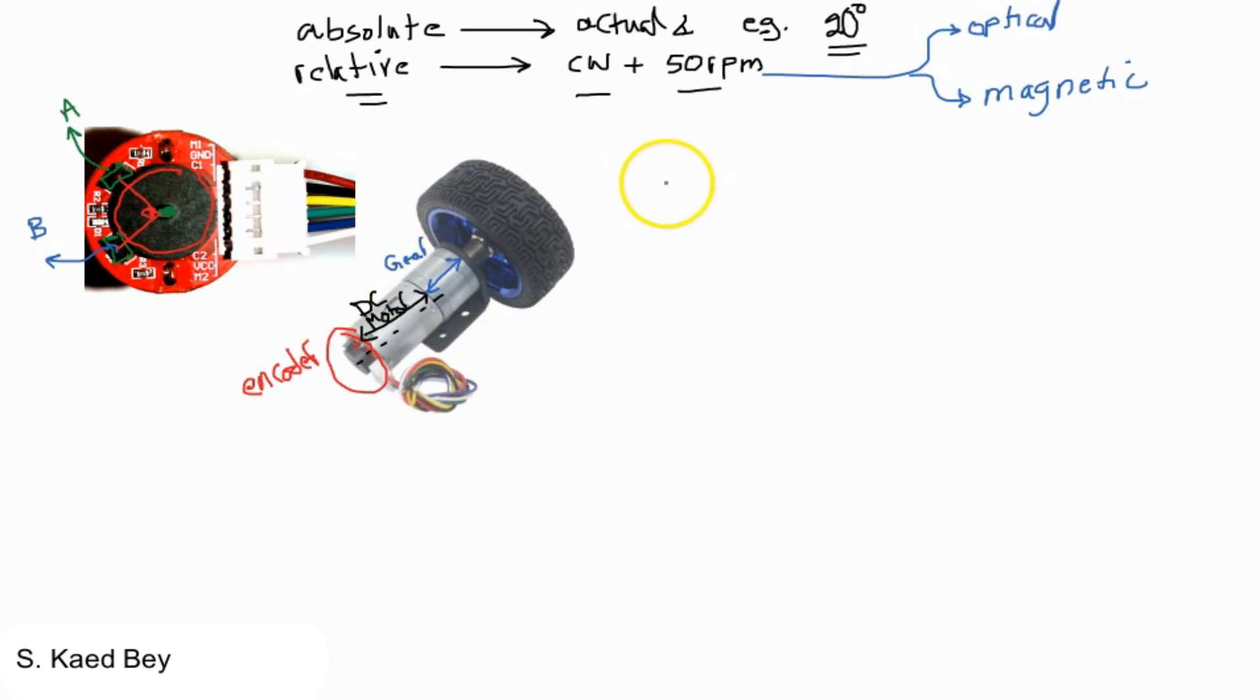A typical output from channel A and B may look like this. So if we consider channel A here, you may get a low, then you get a pulse. These pulses depend on the magnetic disk rotation. Now because channel B is located at 90 degrees, there is always a difference in time between channel A and channel B. So let's assume we have this scenario.